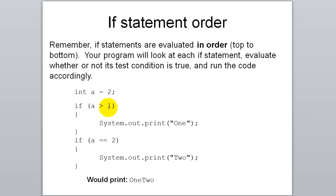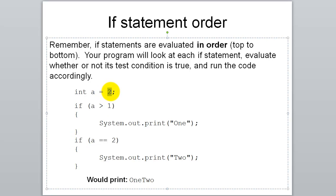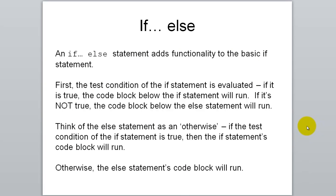Remember that Java runs top to bottom. If we have two separate if statements, each one is evaluated independently. When an if statement ends with its closing brace, the program continues to the next line whether the condition was true or not. For example, if we change a variable to five: five is greater than one so that if runs, but five is not equal to two so that second if is false and doesn't run. Our output would just be one.